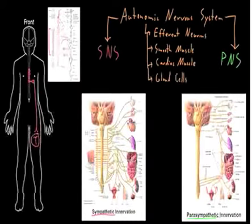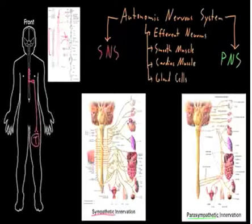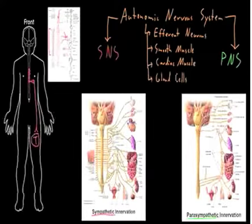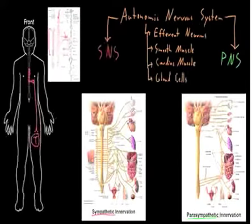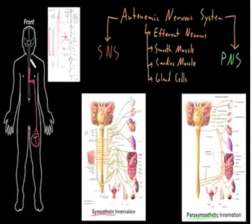Here's another illustration showing the same arrangement: in the middle part of the spinal cord, the first axon comes out, synapses in a ganglia close to the spine, with many of these ganglia linked together in a chain. Then the second neuron sends a longer axon out to synapse on the target cell in whatever tissue you're talking about, containing smooth muscle cells, cardiac muscle cells, or gland cells.